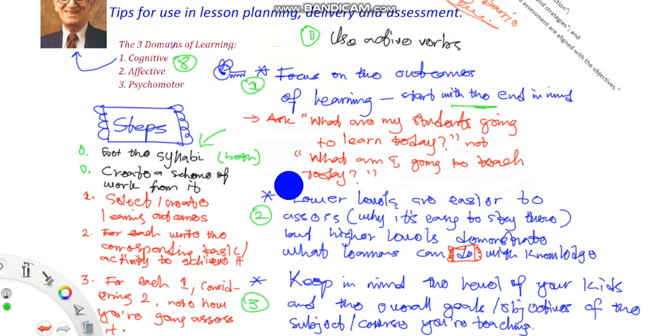The next tip is for you to know that lower levels are easier to assess. Remember I told you Bloom's Taxonomy has six steps, starting from very low levels of thinking to very high levels of thinking. At the low level we have remembering.